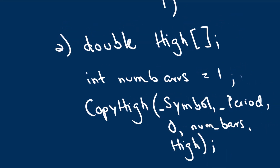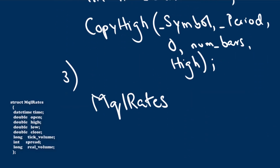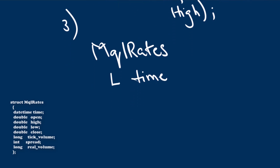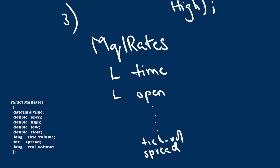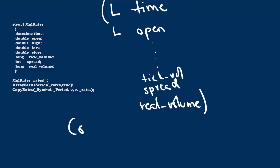The third option involves the MQLRates data structure. In a nutshell, this struct contains all the information we were otherwise accessing individually — time, open, high, low, close, tick volume, spread, and real volume. You populate an MQLRates structure using the CopyRates function.